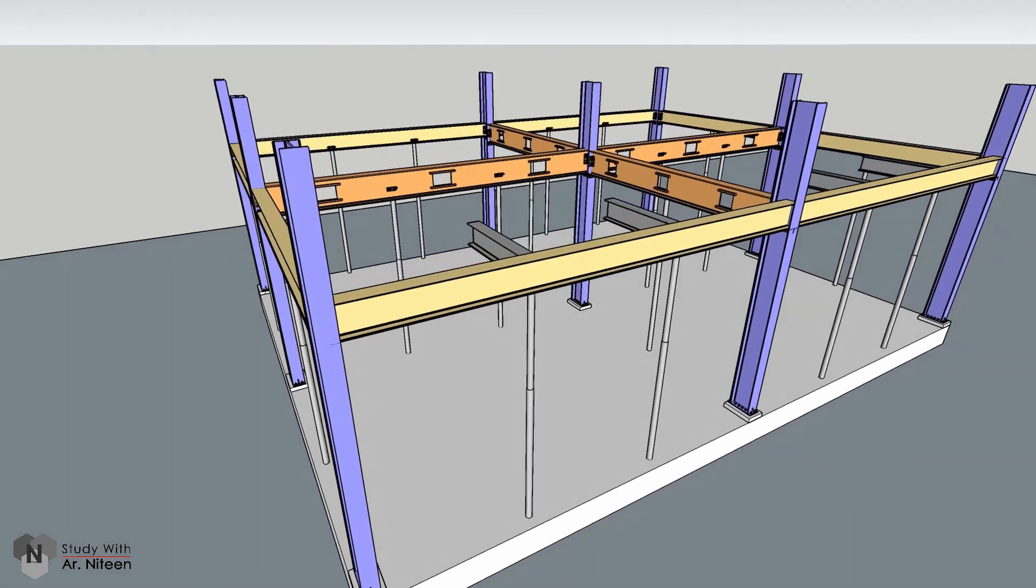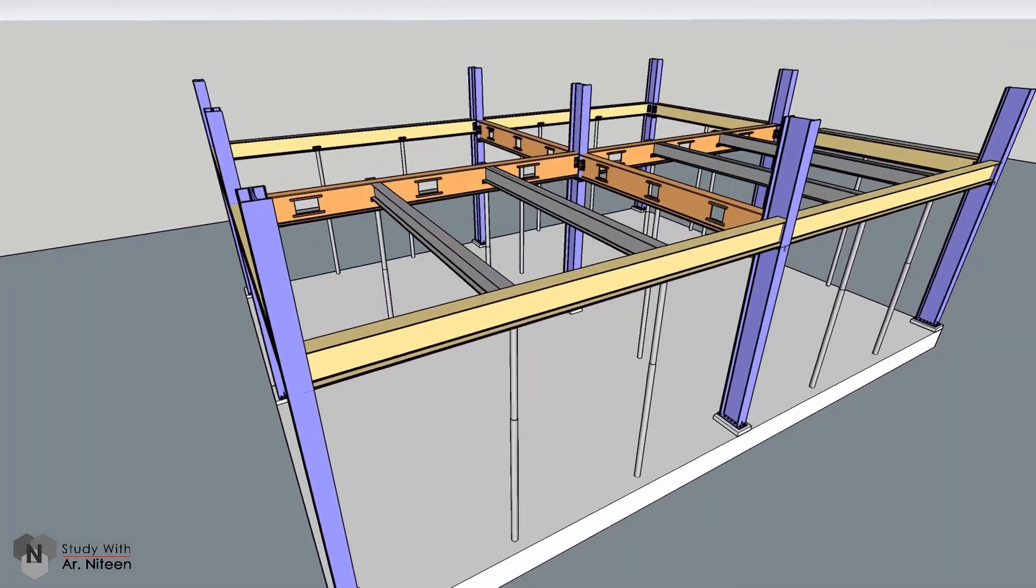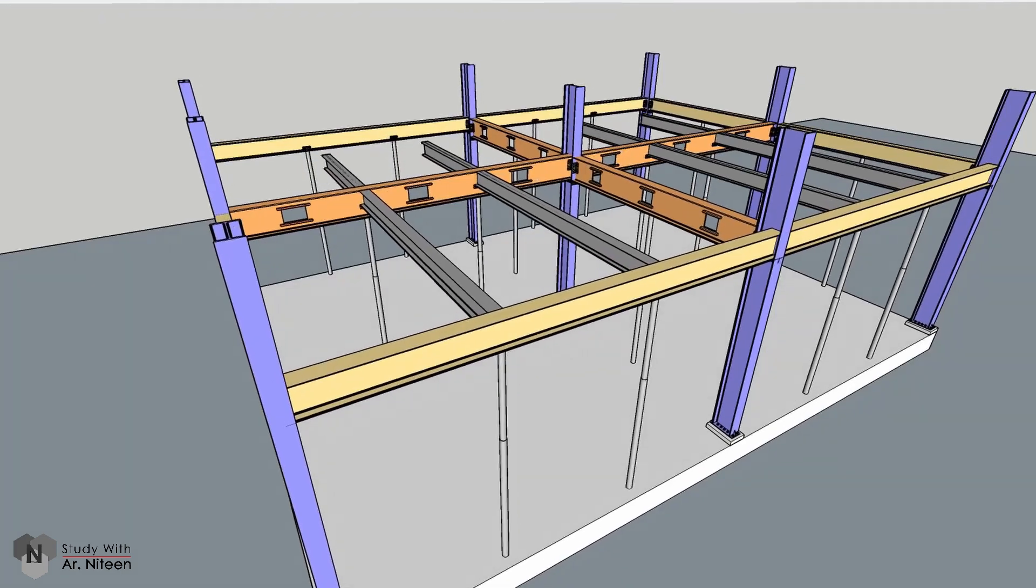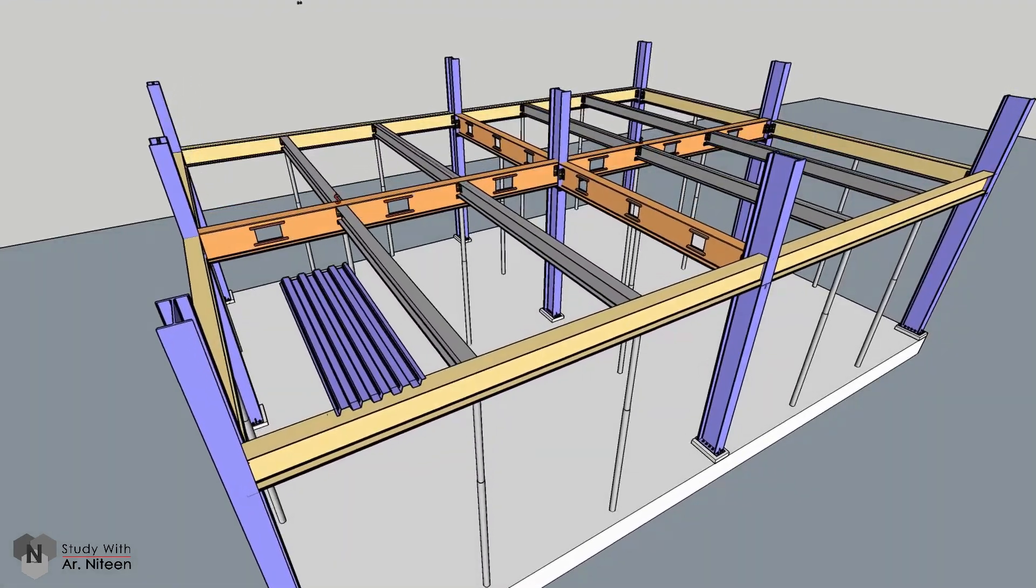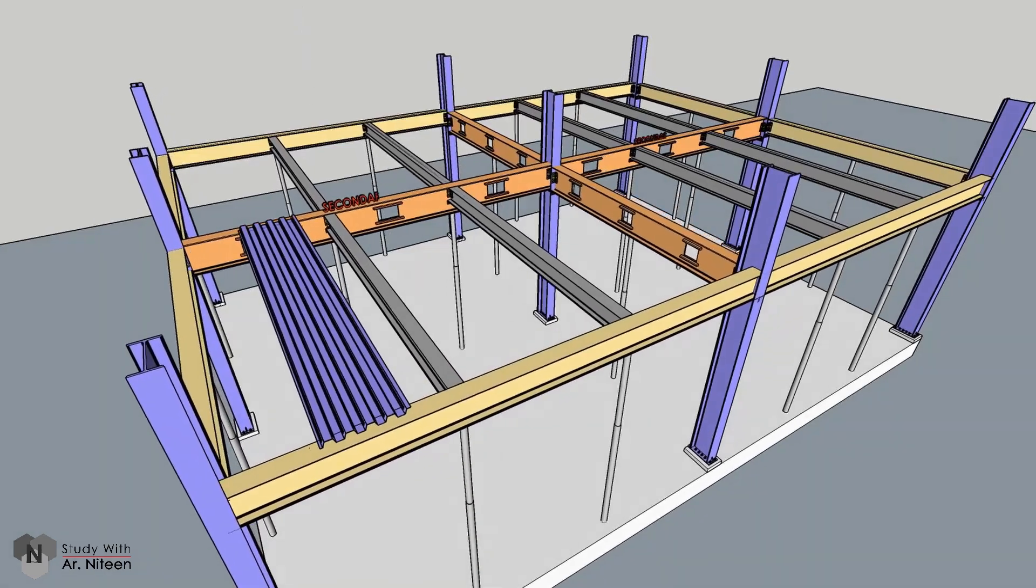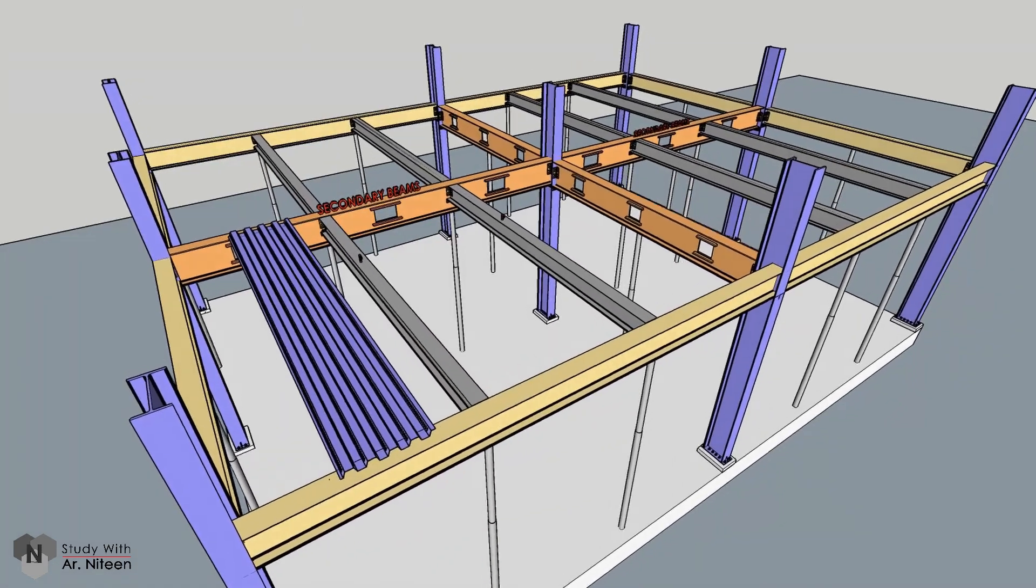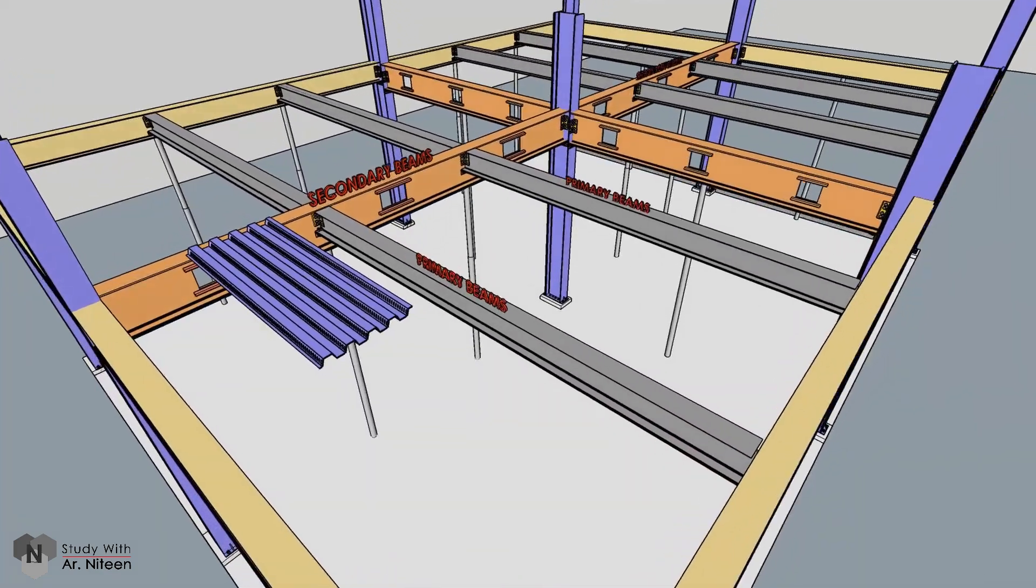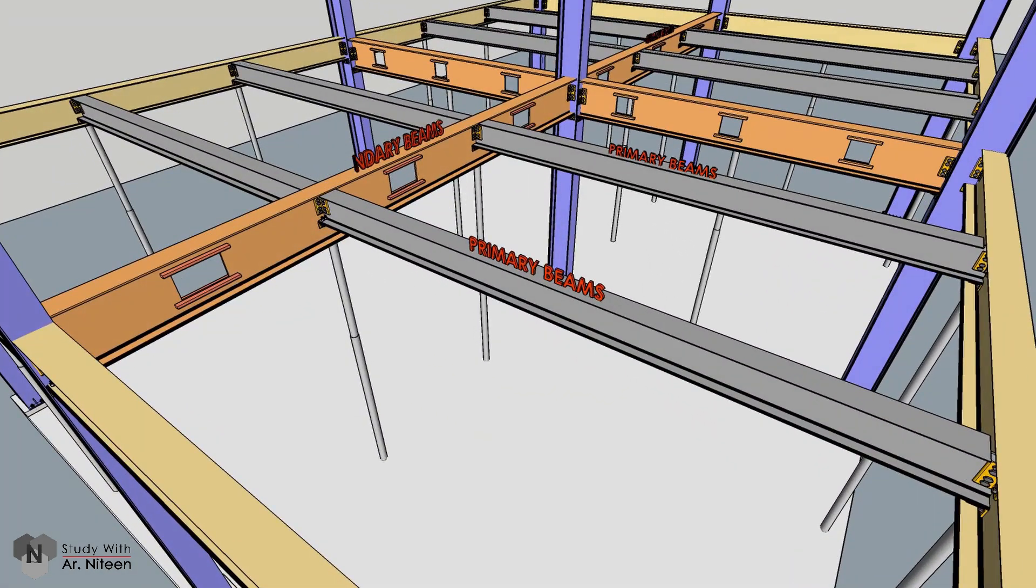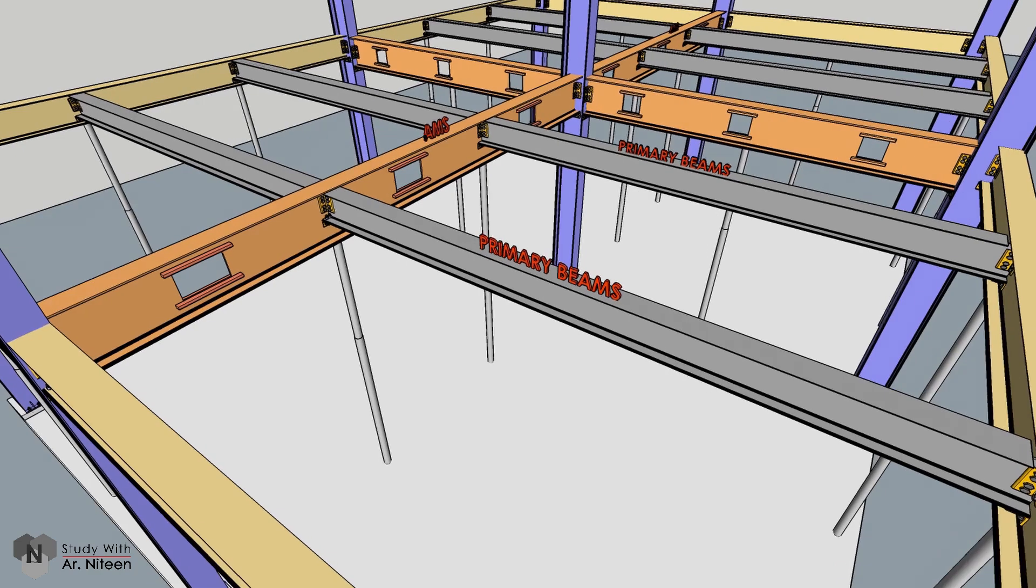There are two main groups of composite beams in composite construction: primary beams and secondary beams. Primary beams have decking spanning in a direction parallel to them, so the decking do not provide lateral restraint. Secondary beams are perpendicular to the decking spanning direction. The top flange of the steel beam is restrained laterally due to the decking and fixings.